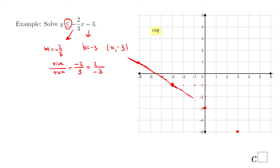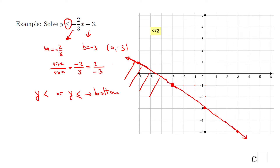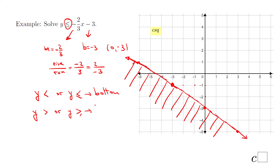We again have two half-planes — bottom and top. The shortcut: if you have y < or y ≤, shade the bottom; you don't really need a test point. In this case we shade the bottom. If you have y > or y ≥, shade the top. Let's verify with the test point to confirm the shortcut works.